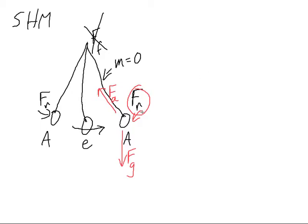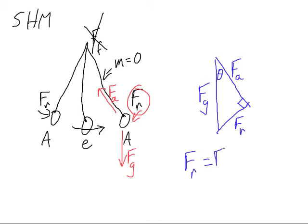If we draw them as kind of a triangle here, there'll be a right angle right there. So this is F_G, here's F_R, and I was calling this F_A. And we'll call this included angle theta. And what we see is that the restoring force is equal to F_G sine theta.